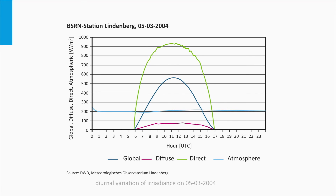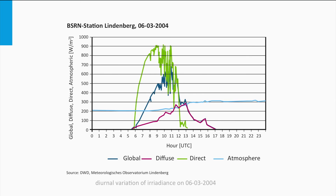A typical clear day data would look like this — direct light in green is dominant over diffuse light in red. In the next example, the morning was clear until 9 am when some clouds passed overhead; direct radiation decreased intermittently and the diffuse component increased. By 1 pm the clouds completely eclipsed the sun and all radiation was diffuse — the green line is nearly zero and the blue and red lines coincide.